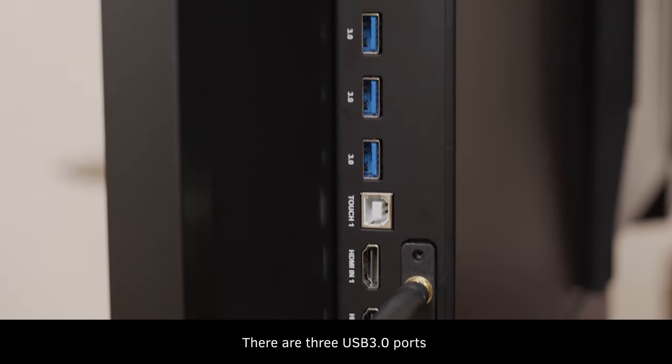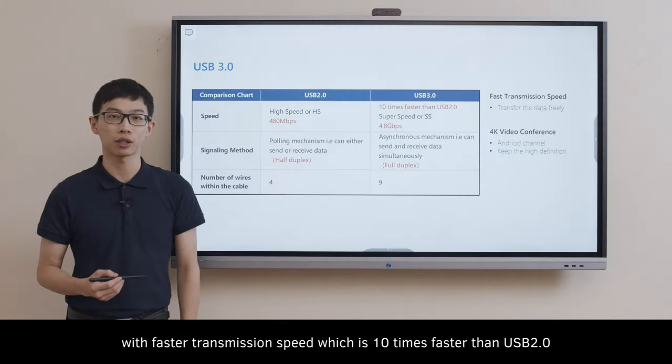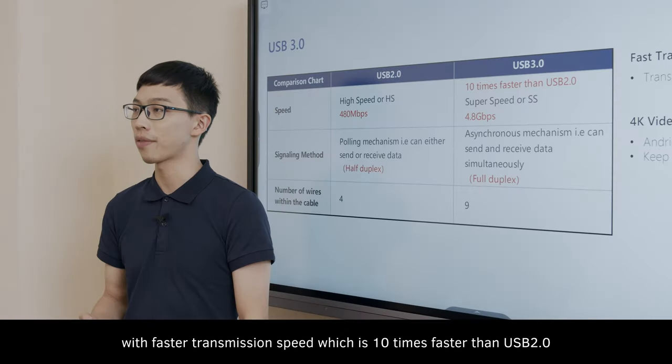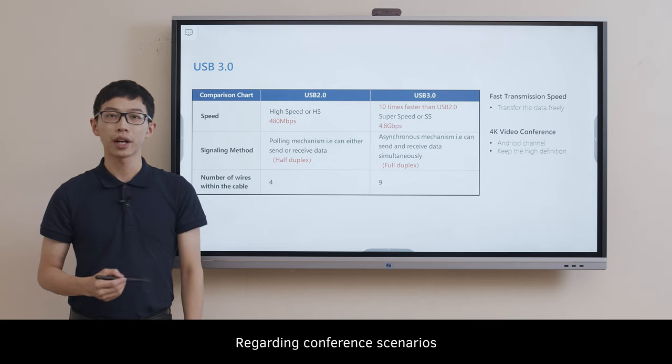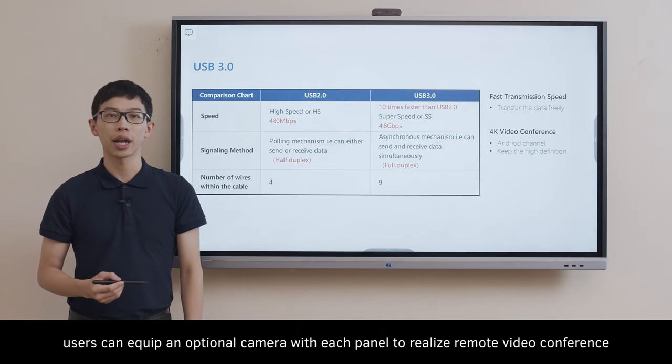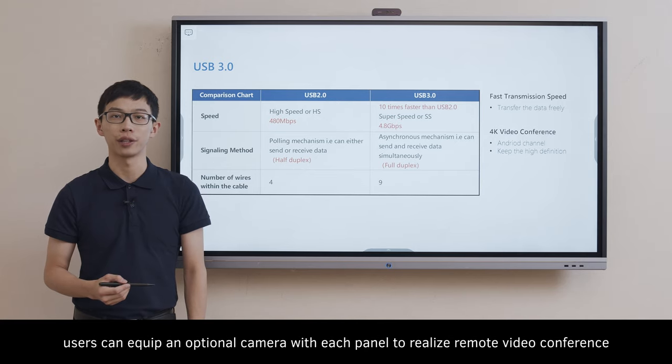There are three USB 3.0 ports with faster transmission speed which is 10 times faster than USB 2.0. Regarding conference scenarios, users can equip an optional camera with each panel to realize remote video conference.